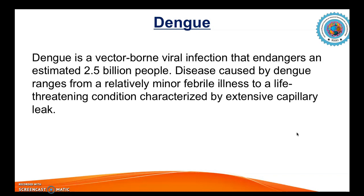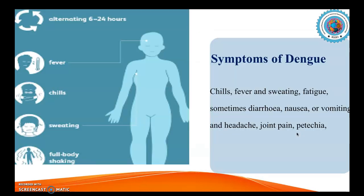Basic symptoms of dengue normally start with a very common fever, chills, sweating, full body shaking, and sometimes diarrhea, nausea, vomiting, headache, joint pain, and petechiae. There are many other symptoms depending upon the stage of dengue — if it proceeds to severe dengue or dengue with warning signs there would be more symptoms, but these are the common symptoms that appear during dengue infection.